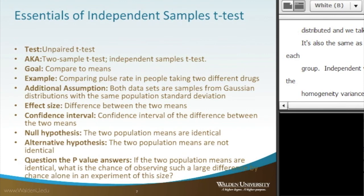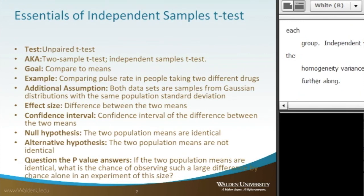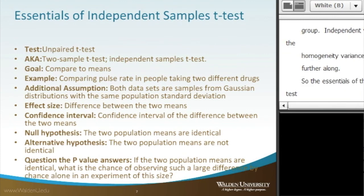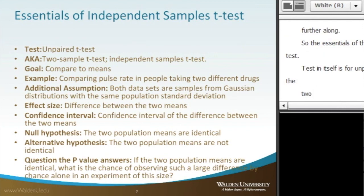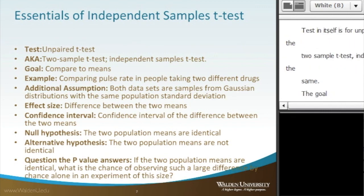The essentials of the Independent Samples T-Test: the test is for an unpaired T-Test, also known as the two-sample T-Test or independent samples T-Test — all the same. The goal of this test is really to compare the means of the two groups.